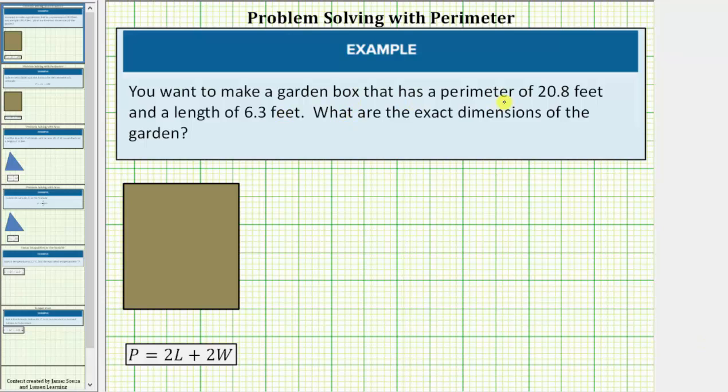You want to make a garden box that has a perimeter of 20.8 feet and a length of 6.3 feet. What are the exact dimensions of the garden? The dimensions would be given by the length and the width of the garden or the rectangle.